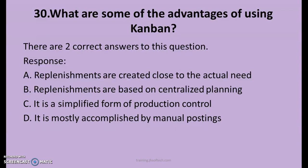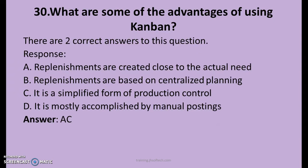30th question. What are some of the advantages of using Kanban? A. Replenishments are created close to the actual need. B. Replenishments are based on centralized planning. C. It is a simplified form of production control. D. It is mostly accomplished by manual postings. There are two right answers. The answers are A and C: replenishments are created close to the actual need, and it is a simplified form of production control.